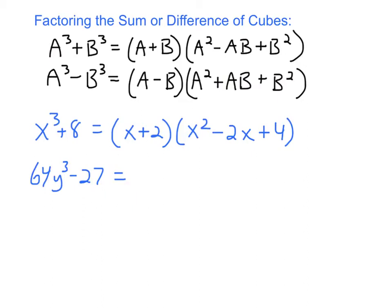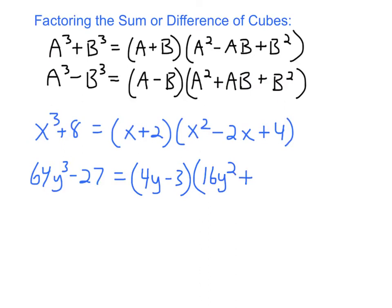In the next example, 64y cubed minus 27: 64y³ is the cube of 4y, because 4y × 4y × 4y = 64y³, and 27 is the cube of 3. They're subtracted, so it's a difference of two perfect cubes. Using the difference of cubes formula, it factors into (4y - 3)(16y² + 12y + 9).